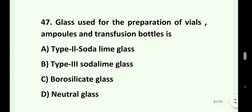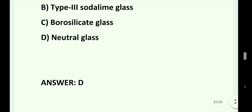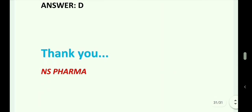Question number 47. Glass used for the preparation of vials, ampoules, and transfusion bottles is: Option A. Type 2 soda lime glass. Option B. Type 3 soda lime glass. Option C. Borosilicate glass. Option D. Neutral glass. Answer is Option D. Neutral glass. Thank you for watching.